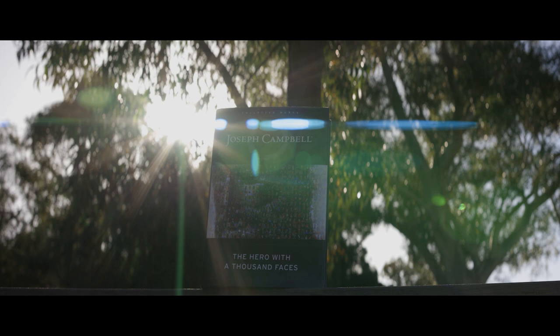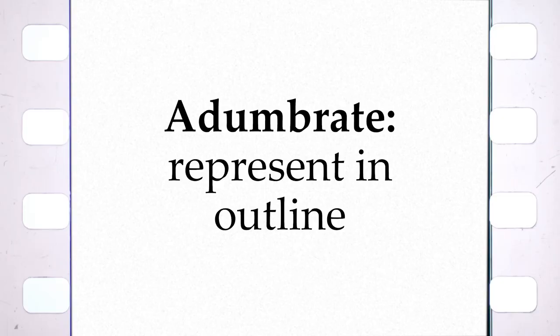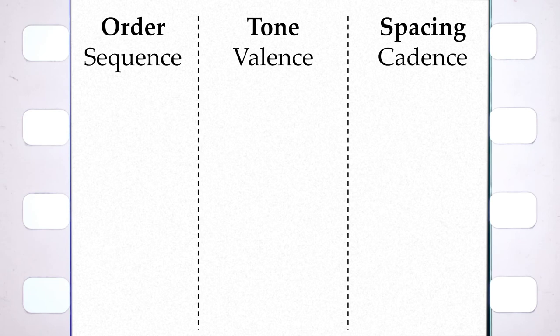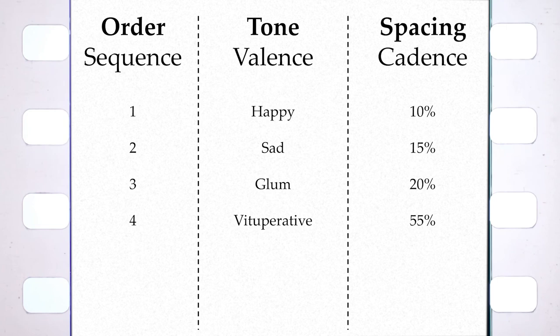For me, structure is about three elements that adumbrate a fourth — and I'm sorry to use a word you don't know, but it's the right word, so here's a definition. The three elements are order, tone, and spacing. If you want them to rhyme, call them sequence, valence, and cadence. All a structure does is tell you what order the events should go in, the tone of the events, and how long each tonal sequence should last.